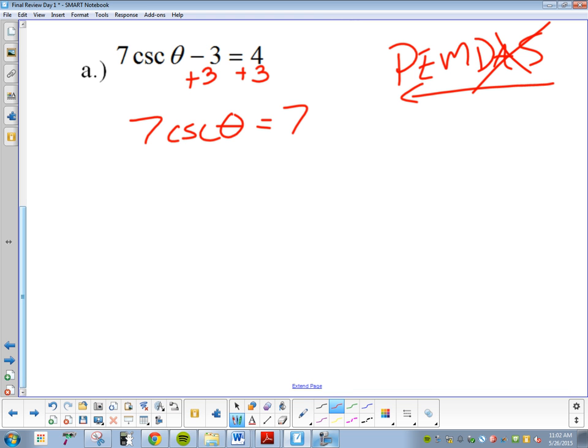Now it says multiply or divide. Juwan, is there anything we could multiply or divide here? We got a 7 in front. So, let's divide that. So, cosecant of theta equals 1. Super.